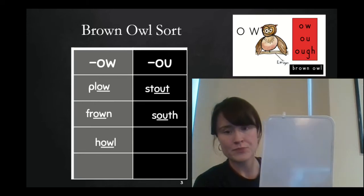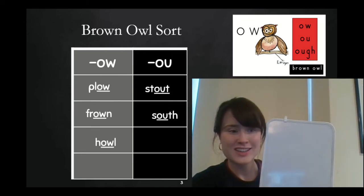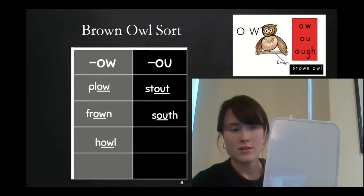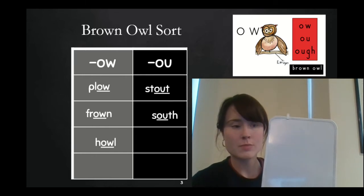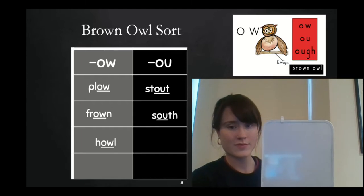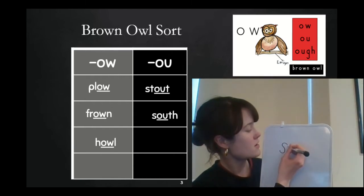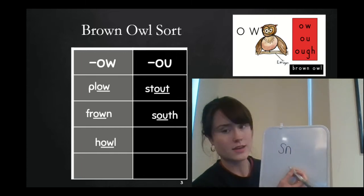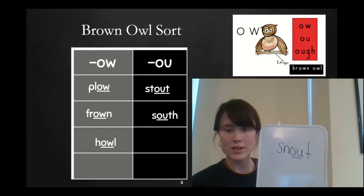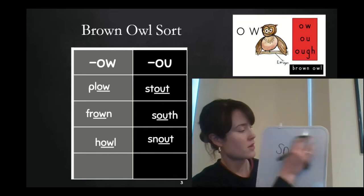All right. You ready for two more? Good. You're always ready for a challenge. Build the word snout. A snout is a dog's nose. Build the word snout. Snout. All right. S-N says sn. Out. Snout. Nice work, friends. I'm going to add it to my O-U column.